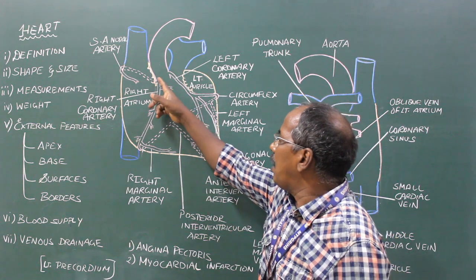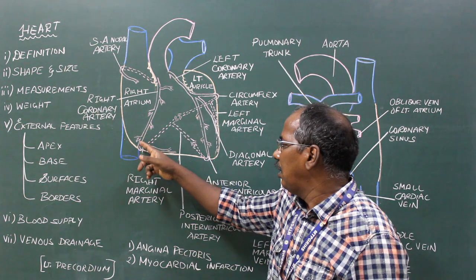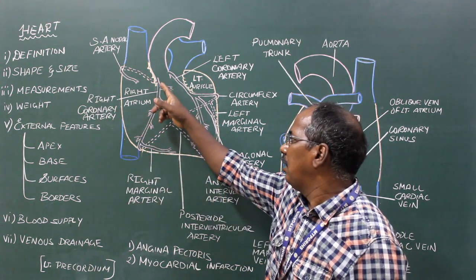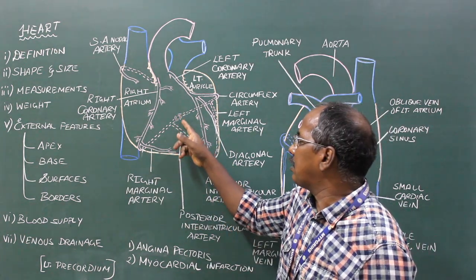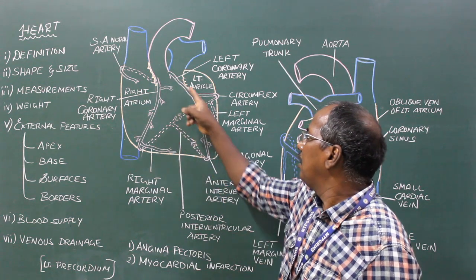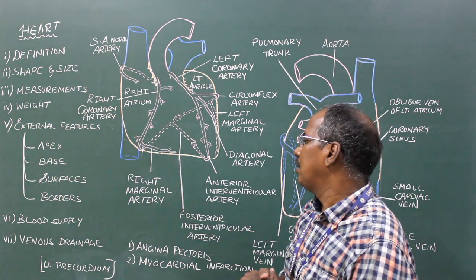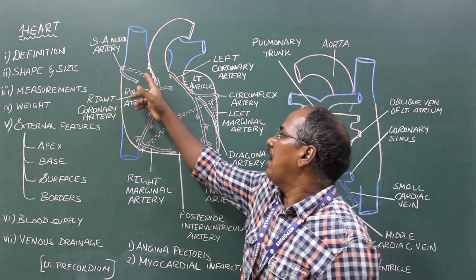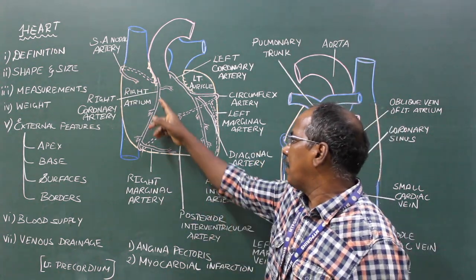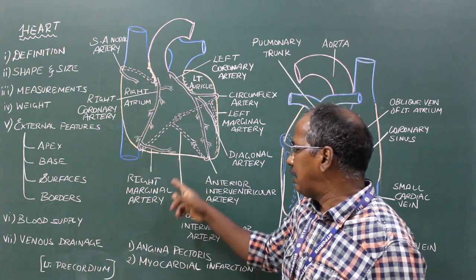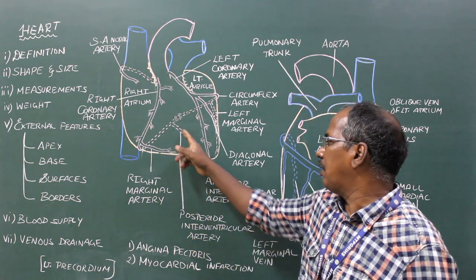Course — it runs downwards and to the right in the coronary sulcus. Termination — it ends by anastomosing with the left coronary artery. Branches: number 1, sinoatrial nodal artery which supplies the SA node. Number 2, right marginal artery. Number 3, posterior interventricular artery.